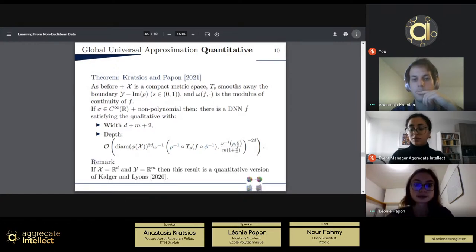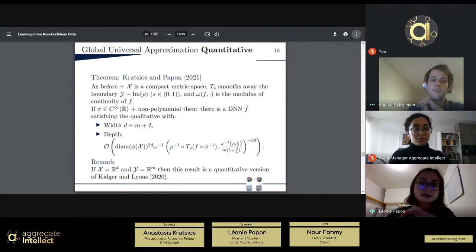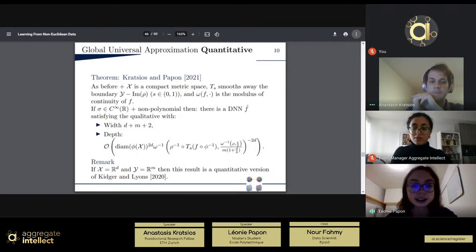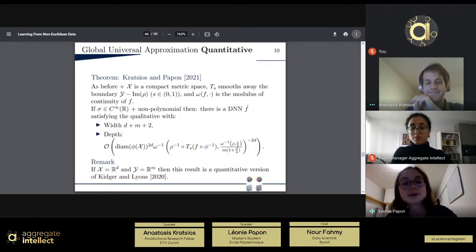And just as a remark, if you take the input space x to be Rd, or more precisely, a compact set in Rd, and then the output space y to be Rm, then this result is simply a quantitative version of the theorem of Keydor and Lyons, proven 2020.